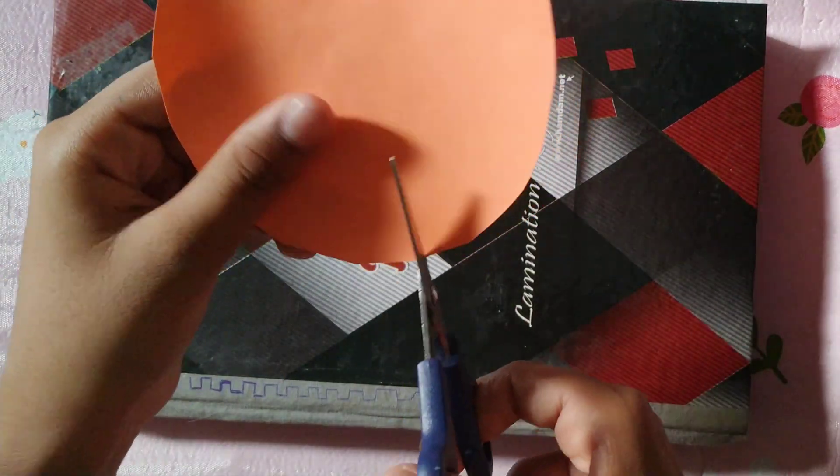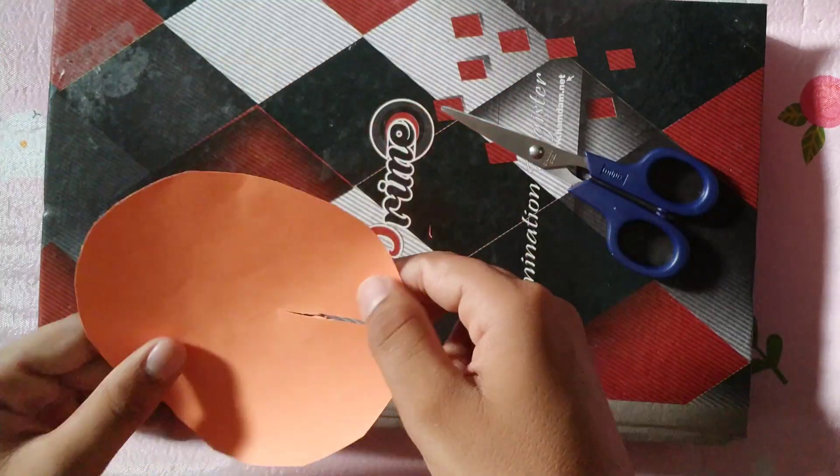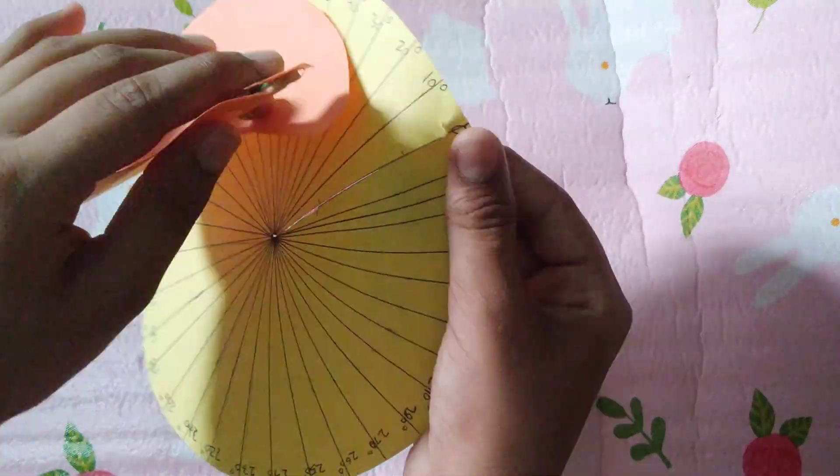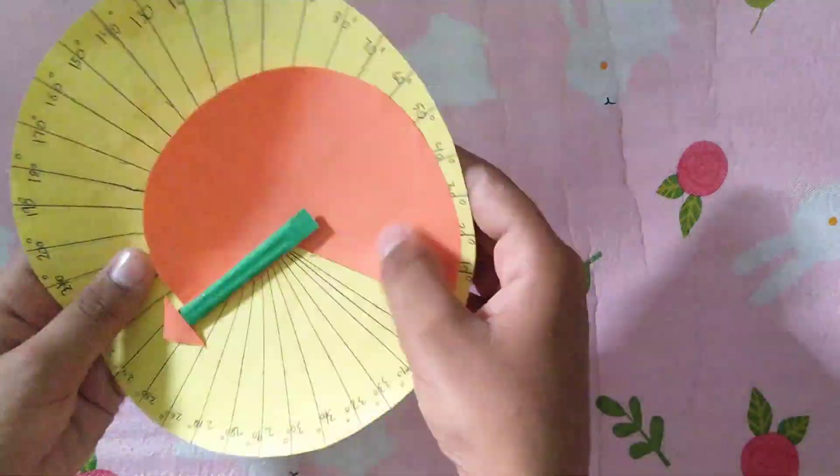So now you're going to take another circle and then put an arrow and then insert the circle in the bigger one so we can make our model.